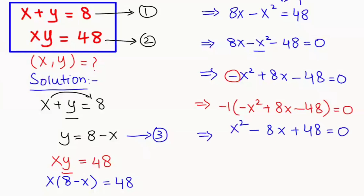Now here we get the quadratic equation. This is our a, b has a negative sign — b is negative 8 — and c is positive 48. We are going to plug in the a, b, c values in the quadratic formula for finding out the value of x.